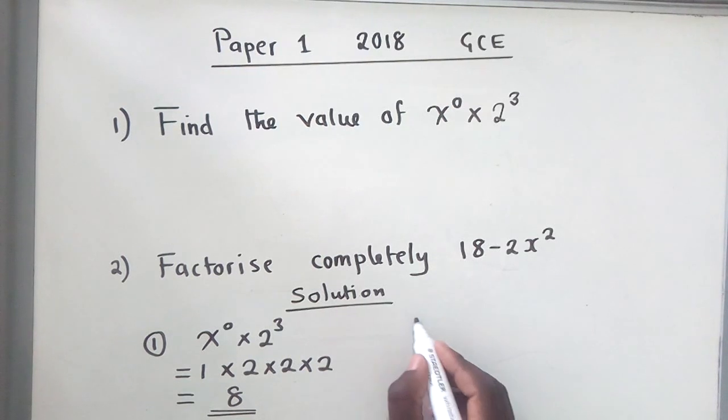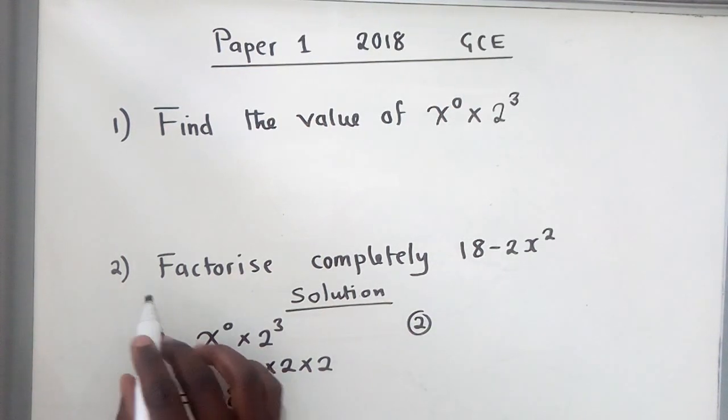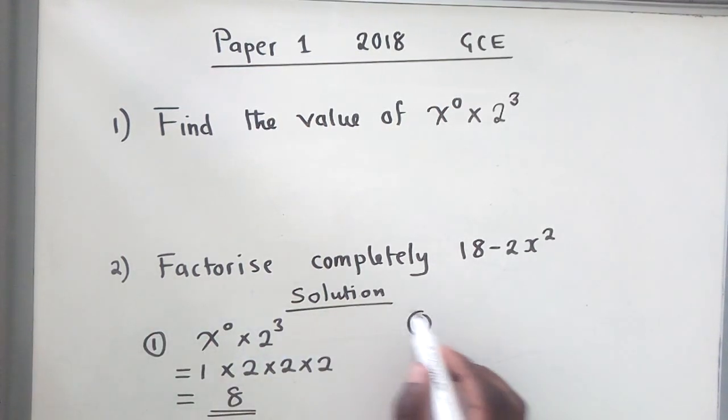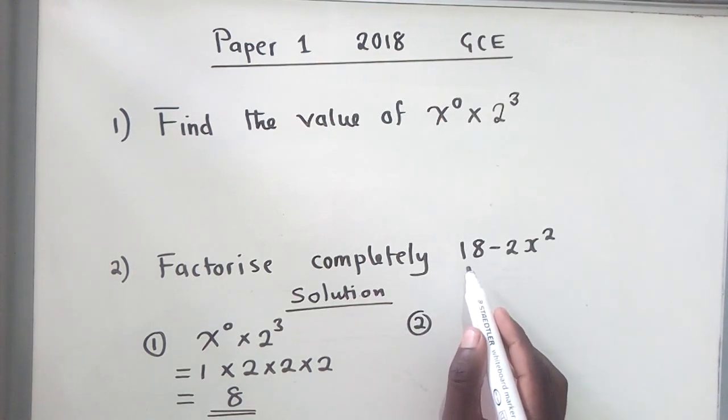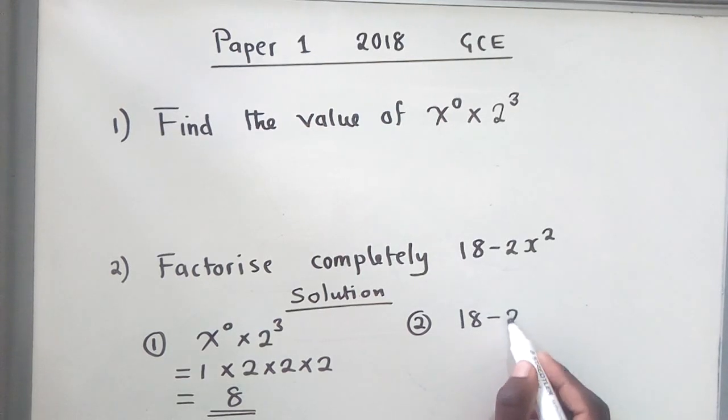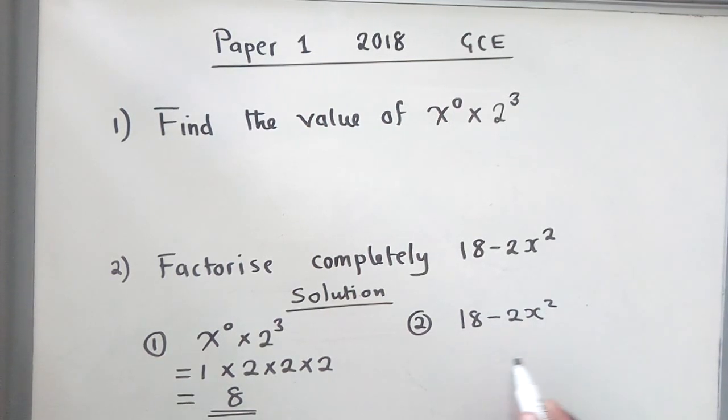Question two says: Factorize completely 18-2x². To factorize this completely, copy what you've been given, then check what is common in both terms.